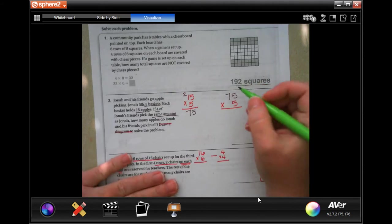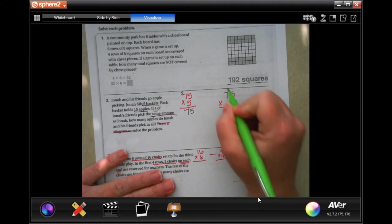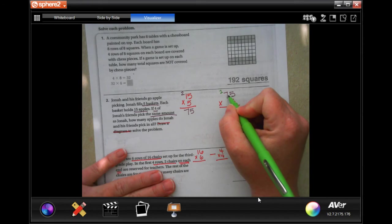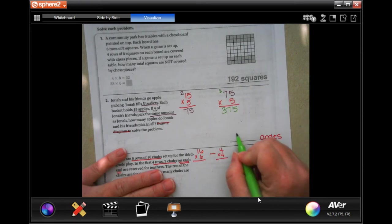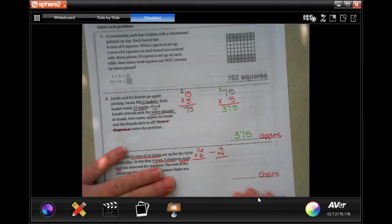Now, five times five, 25 still. Five times seven is 35 plus two more is 37. So, 375 apples.